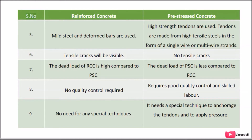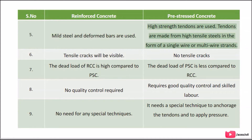Point 5: Mild steel and deformed bars are used in RCC, whereas high-strength tendons are used in PSC. Tendons are made from high tensile steels in the form of a single wire or multi-wire strands. Point 6: Tensile cracks will be visible in RCC, whereas there are no tensile cracks in PSC.